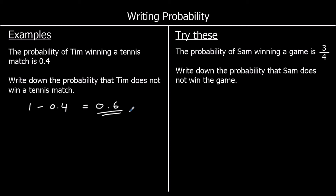And one for you to try. The probability of Sam winning a game is three quarters. Write down the probability that Sam does not win the game. The probability of winning and not winning must add up to one whole. What you add to three quarters to get one whole is one quarter.